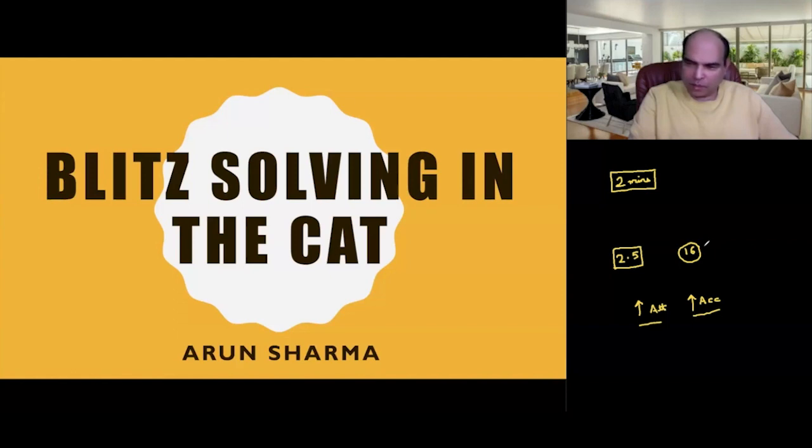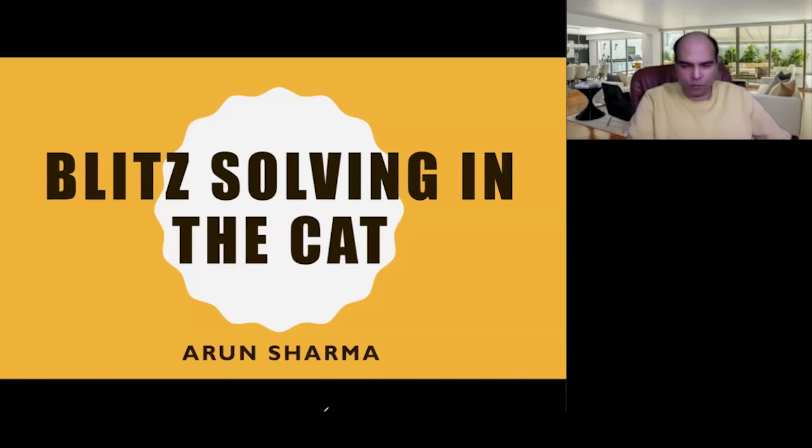If this student can take his attempts to 18 or 19, increase his score by two or three attempts, his score will automatically go up. This becomes very crucial in the last phase of CAT prep when you're close to the finish line and trying to develop your scores.